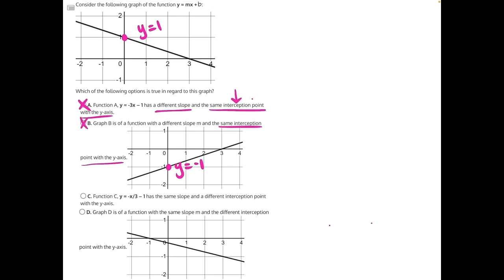Looking at both answer choice C and D, the main thing that's going to help us figure out which one is the correct answer is the slope, because both claim to have the same slope but different interception points. And they do have different interception points.